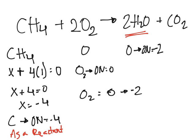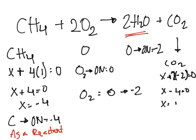Now let's solve for CO2. We don't know carbon's oxidation number, so it's X. Oxygen has an oxidation number of minus 2, and we have two oxygen atoms, so X plus 2 times (minus 2) equals 0. That gives us X minus 4 equals 0, so X equals plus 4. Carbon has an oxidation number of plus 4 in CO2. So carbon went from minus 4 in CH4 to plus 4 in CO2.